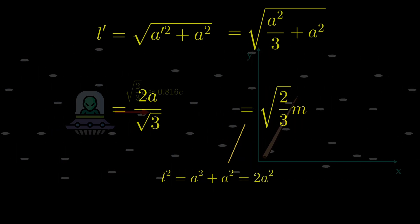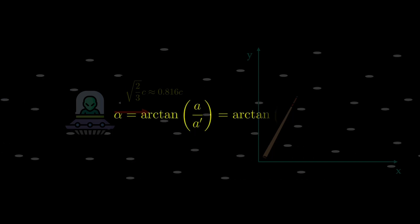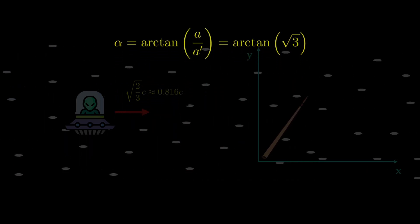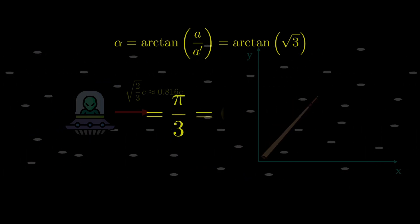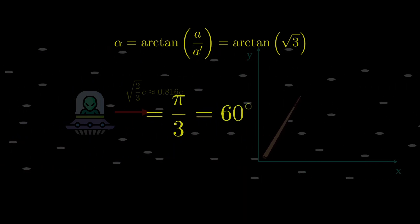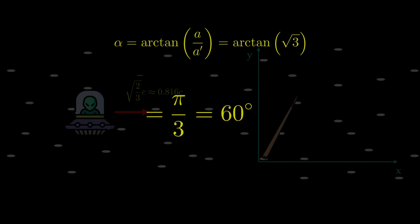Now we can also calculate the new angle. We are using the inverse tangent of a divided by a prime which is the inverse tangent of a square root of 3. This equals pi over 3 and this eventually is equal to an angle of 60 degrees.